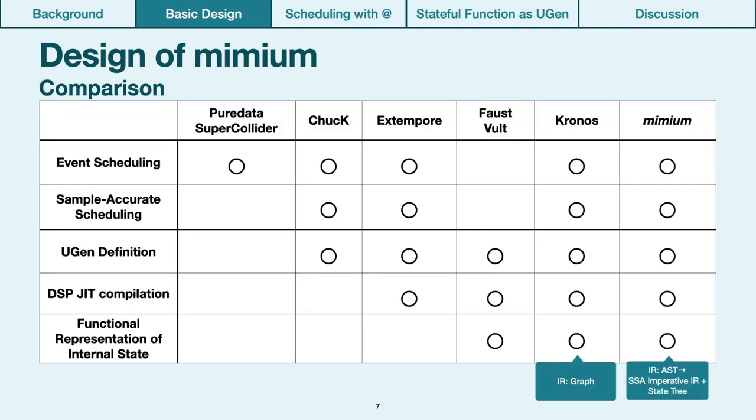The table in the slide shows a comparison of the language specification of Mimium and existing languages. Mimium covers all the event scheduling, scheduling with sample accuracy, and fundamental definition of unit generator, with just-in-time compilation using LLVM, and functional representation of internal state for UGen. In this table, we cannot see the difference between Kronos and Mimium. The difference between these two languages is intermediate representation. Kronos uses a graph structure IR, and Mimium uses imperative IR, which resembles general-purpose languages.